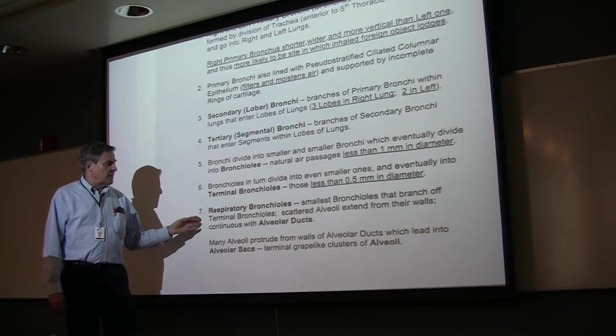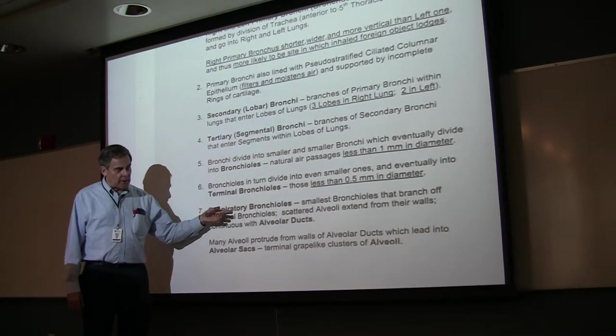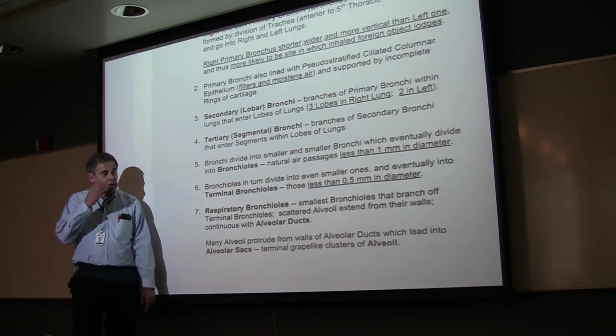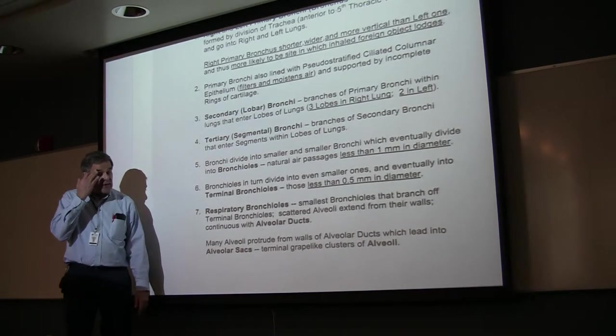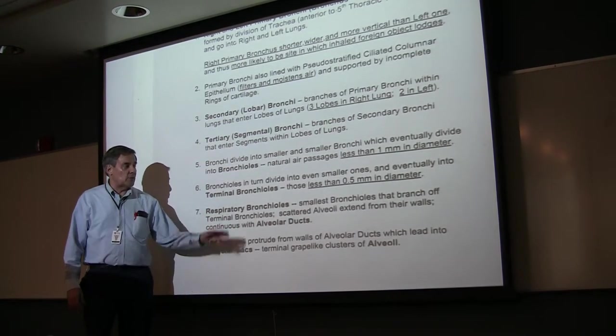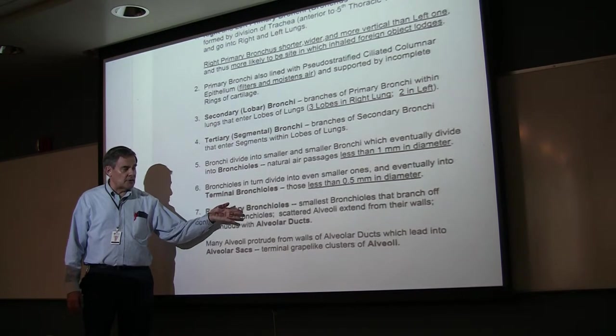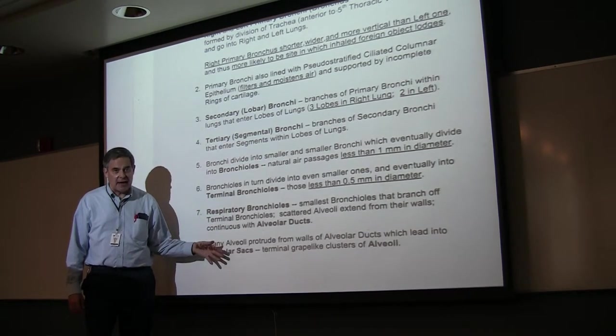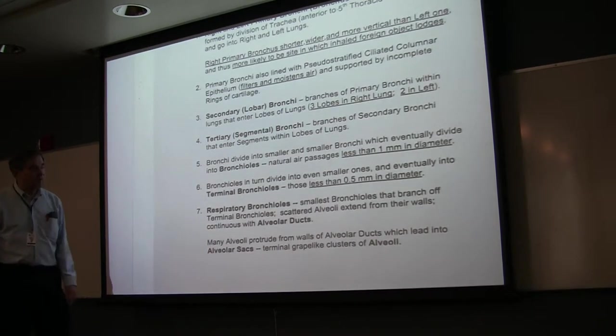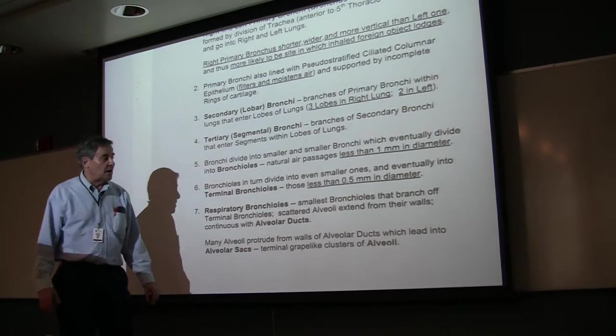These, in turn, carry air to and from the respiratory bronchioles. They branch off the terminal bronchioles and then feed air into the alveolar ducts and the alveolar sacs. The respiratory bronchioles, alveolar ducts, and alveolar sacs are composed of alveoli. The alveolar sacs are just clusters of alveoli.